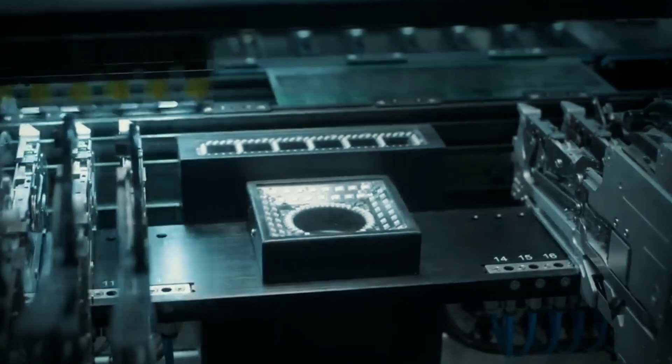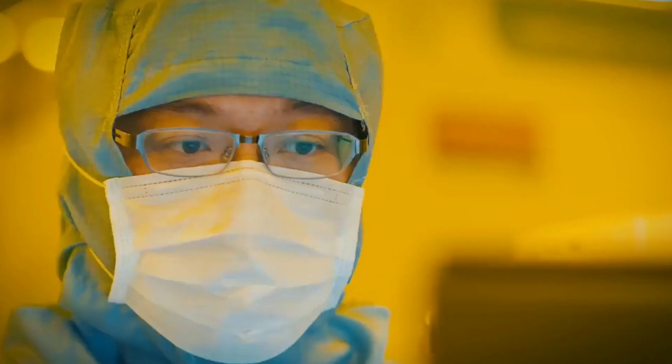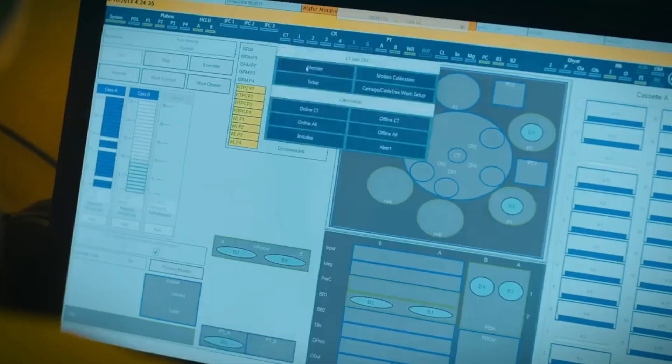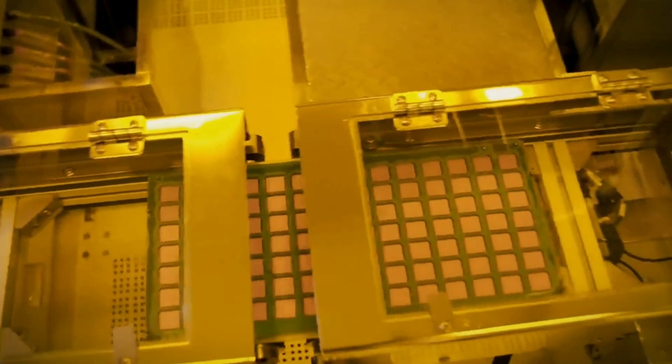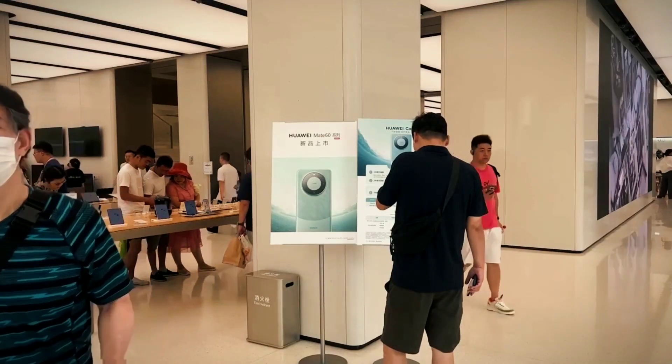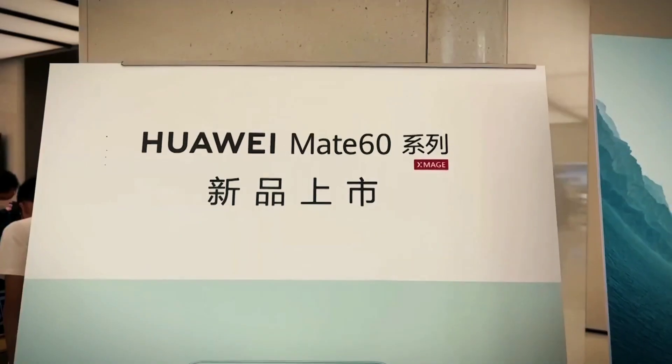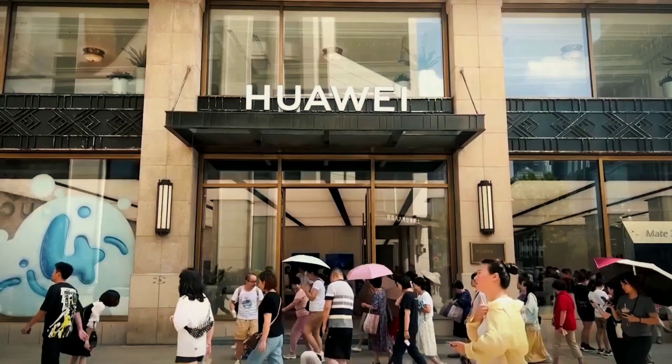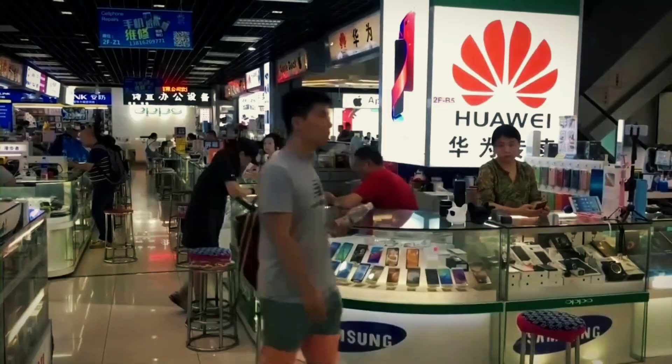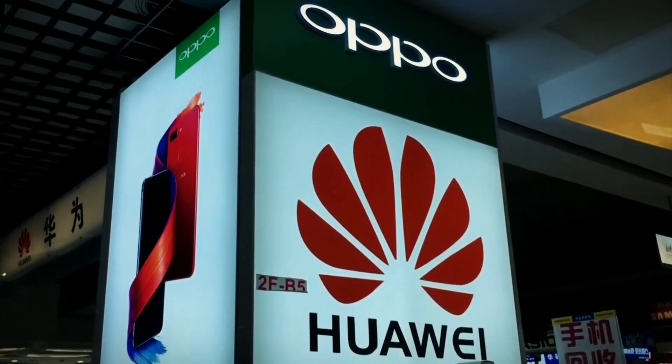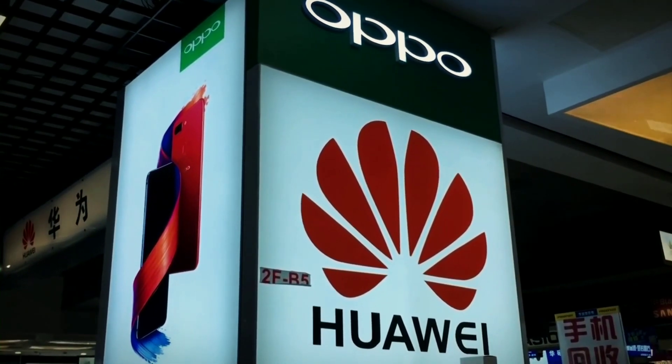And SMIC has advanced even more at this point. The Financial Times recently reported that SMIC is establishing new production lines to produce 5nm chips for Huawei, another massive Chinese tech company that is the target of US sanctions. This would offer Huawei a competitive advantage in the smartphone market and put SMIC on par with TSMC's existing technology.